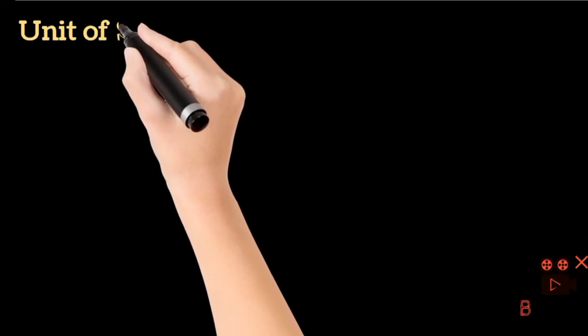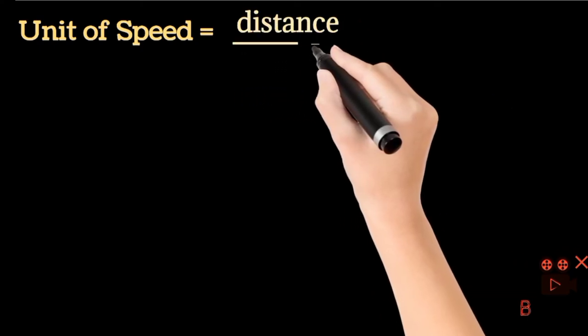Now, let's know what is the unit of speed. Speed equals to distance divided by time. Distance divided by time.